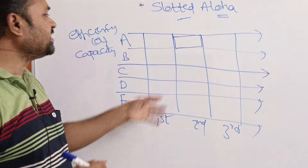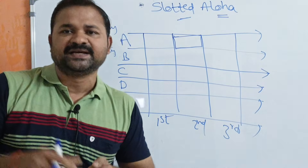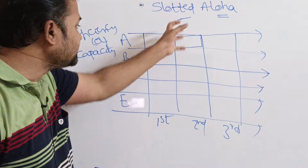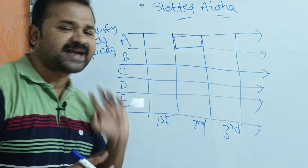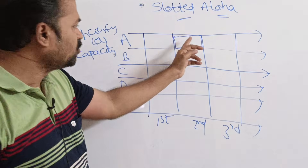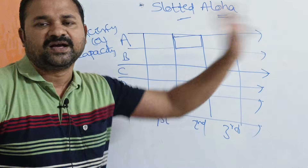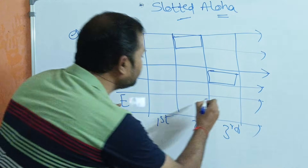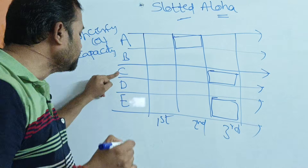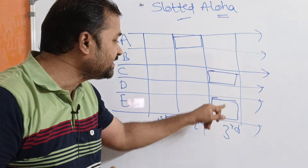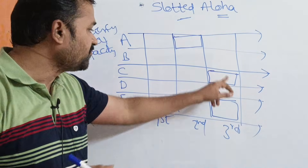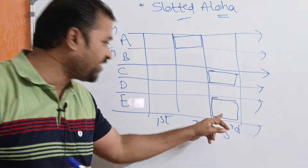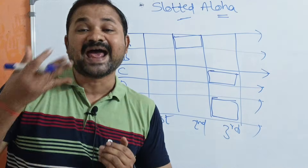When multiple users try to transmit data at the same time, a collision will occur. Let us assume that during one slot, user C wants to send a frame and user E also wants to send a frame. Since C and E are trying to send frames simultaneously, a collision occurs.